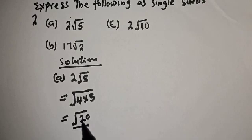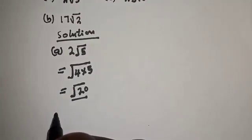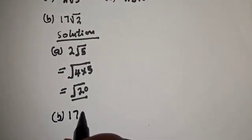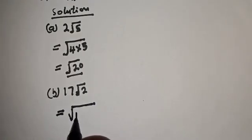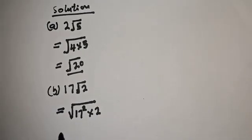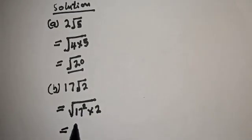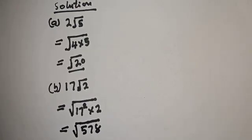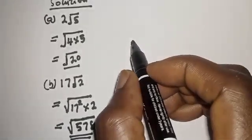For (b): 7 root 2 equals square root of 7 squared multiplied by 2. This equals square root of 49 times 2, which gives us square root of 98. We have expressed this as a single surd.